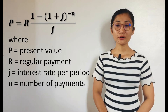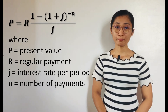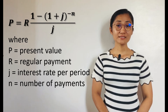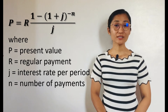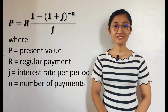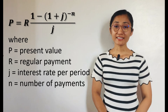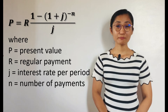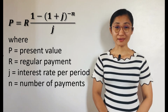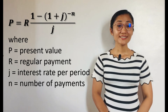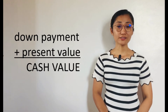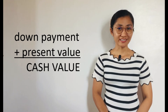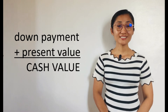The formula to be used for the present value P of an ordinary Annuity is: P equals R times 1 minus (1 plus J) raised to the negative N, over J — where R is the regular payment, J is the interest rate per period, and N is the number of payments. It is also important to know that the cash value or cash price of a purchase is equal to the down payment plus the present value of the means of payments.